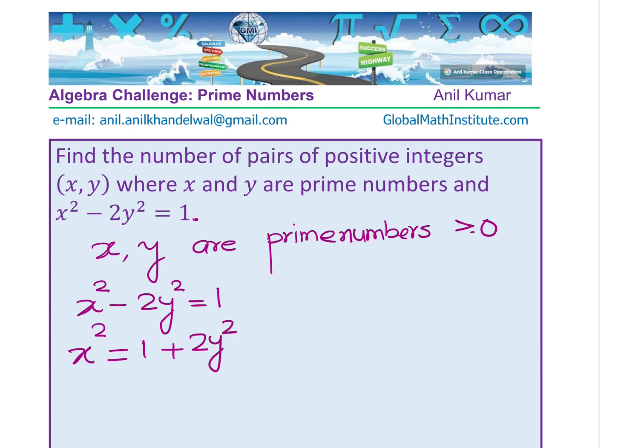Now that indicates what? Well, 2y² is even, and when we add 1, then the whole thing becomes odd. So that means x² is odd, which means x is odd.